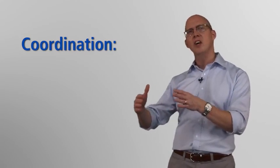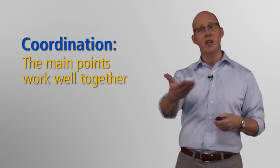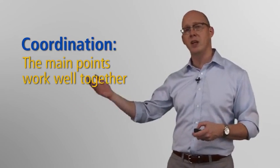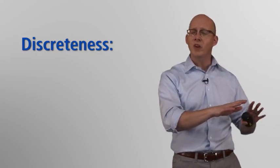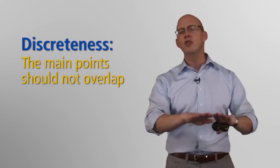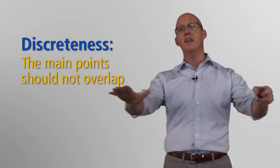So that's subordination — a big, important point. Now I want to talk about coordination and discreteness. Coordination simply means the main points work well together, and this is important in three-to-six minute impromptu speeches, just as it would be in an hour-and-a-half long speech. On the flip side, discreteness: are the points discrete from one another? Our concern is that the main points don't overlap — they address different realms, different ways of being.